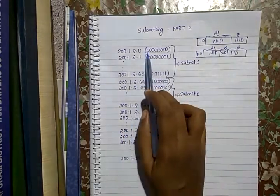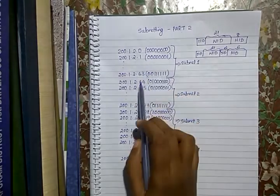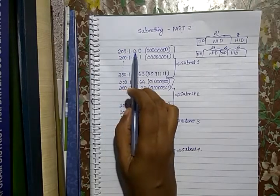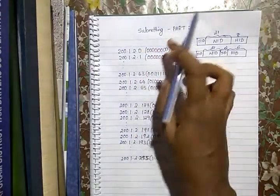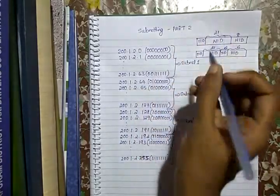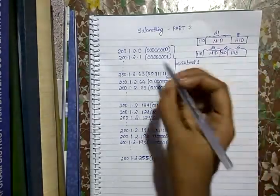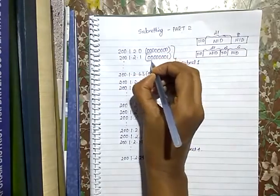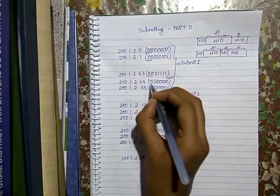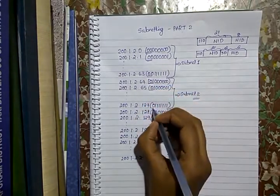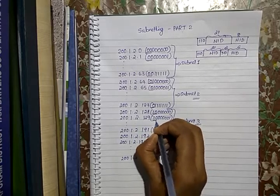I'm writing the binary representation of the least significant 8 bits — the last octet. The network ID is 24 bits and remains the same for all addresses; what varies is the last octet. Observing any address in subnet 1, the host ID part starts with '00'. In subnet 2, it starts with '01'; in subnet 3, with '10'; and in subnet 4, with '11'.